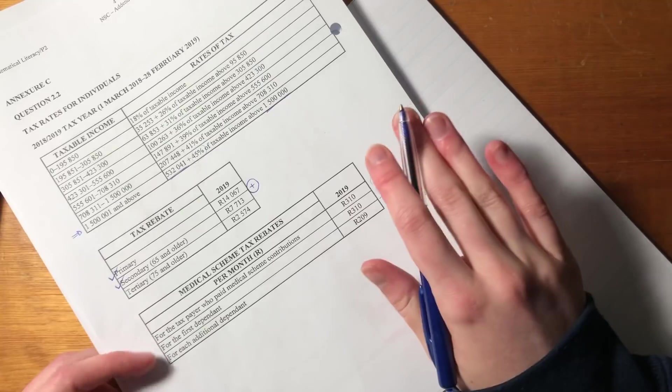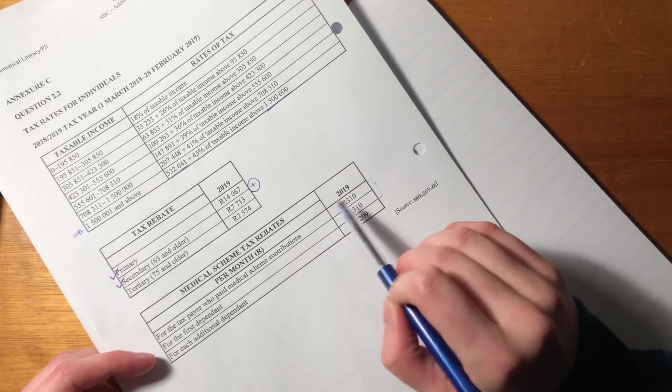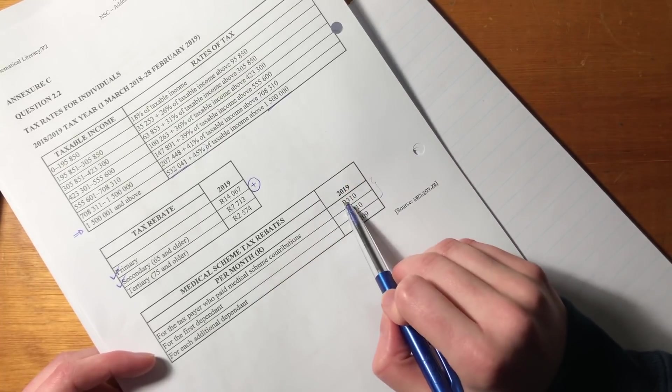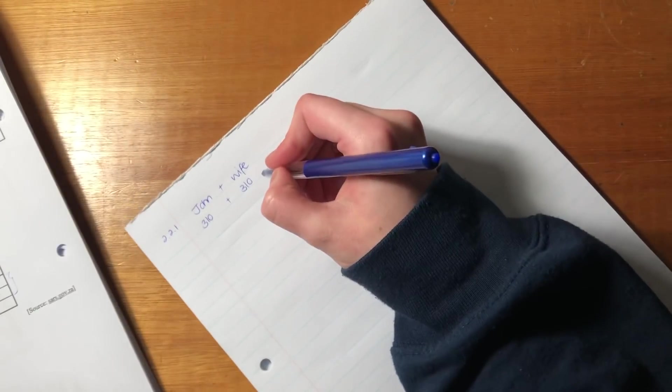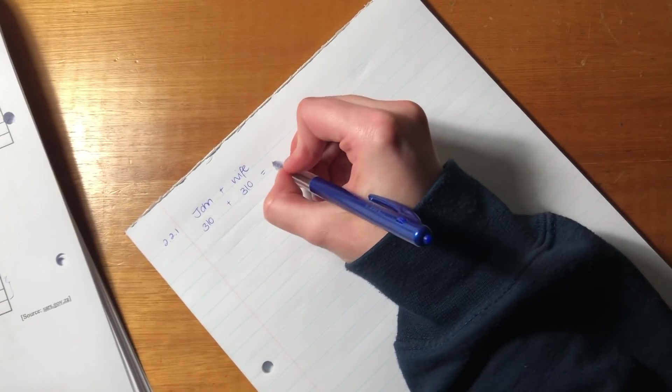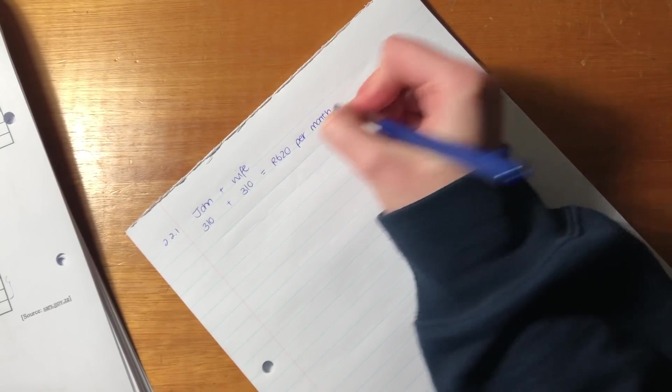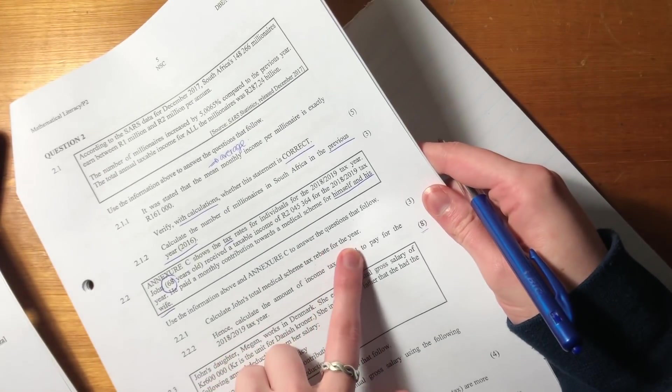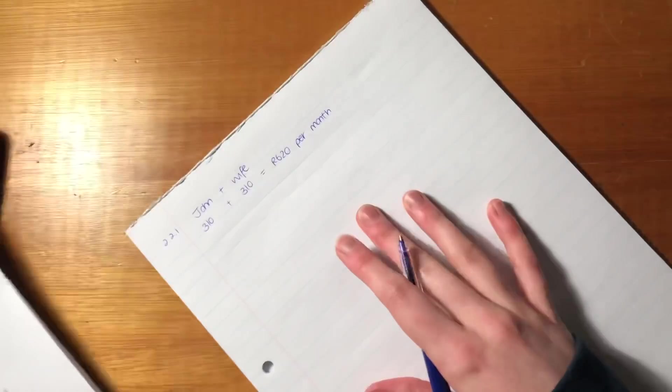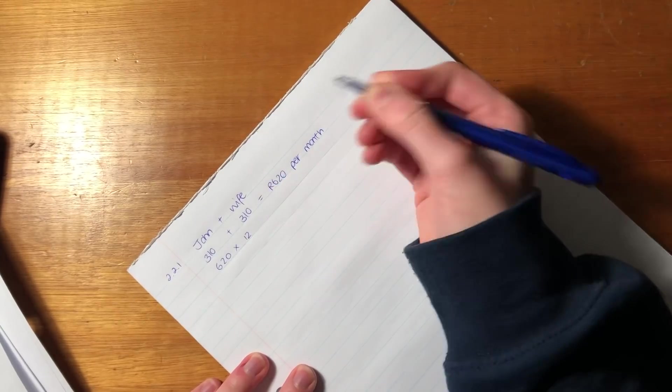So it means if I am only paying 2,000 to my medical scheme per month, this is how much I get as a rebate. If I'm paying 5,000 rand to my medical scheme, this is how much I get as a rebate. It does not vary according to how much I contribute. Okay. So this is how much they get each month. If you add those two things together, it's 620 rand per month. Okay. But what did the question ask us? The question asked us for the yearly rebate.